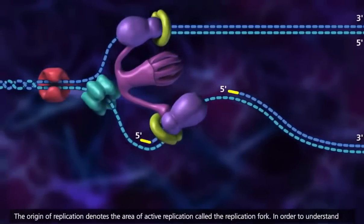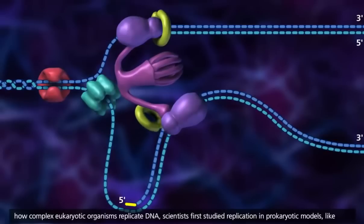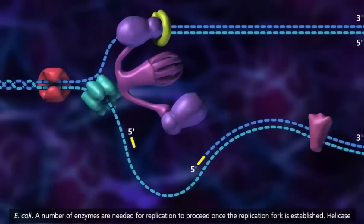In order to understand how complex eukaryotic organisms replicate DNA, scientists first studied replication in prokaryotic models like E. coli.